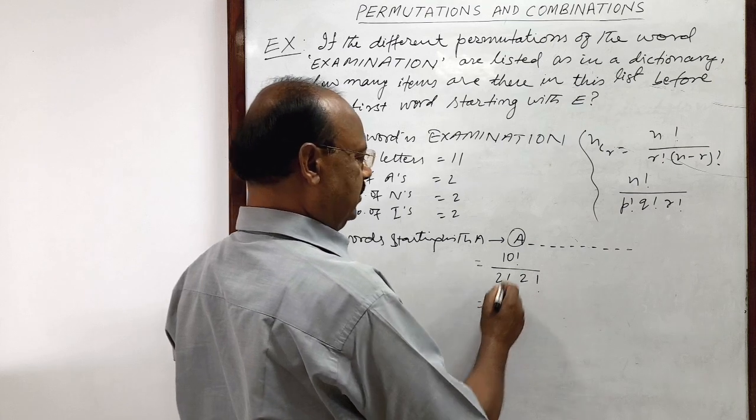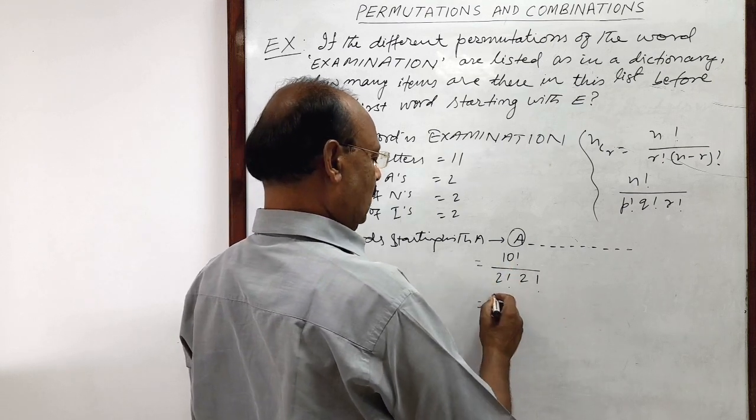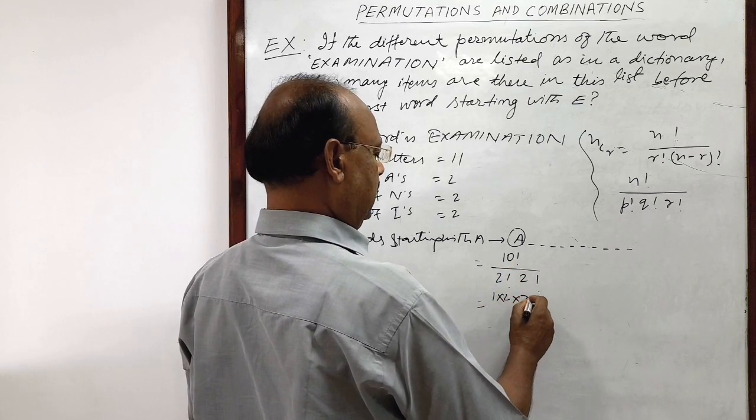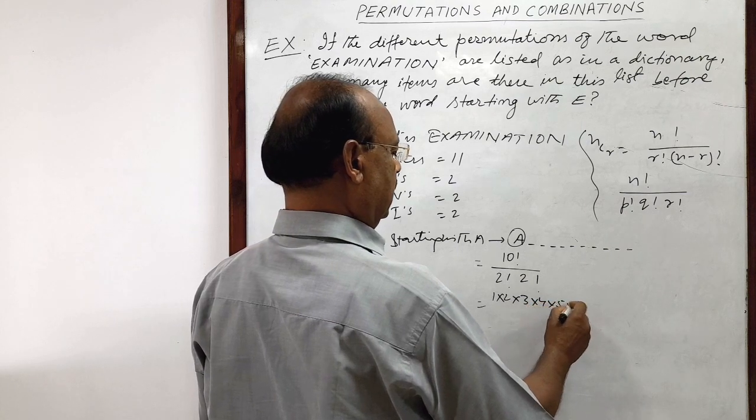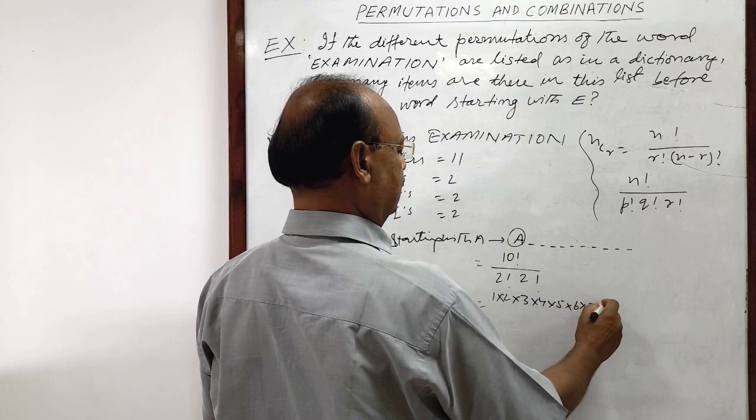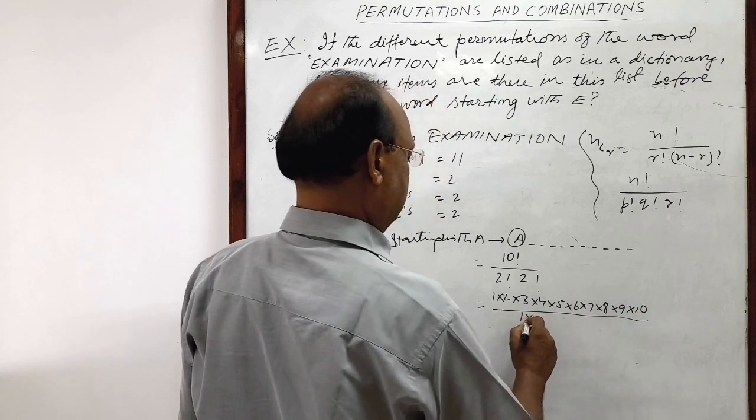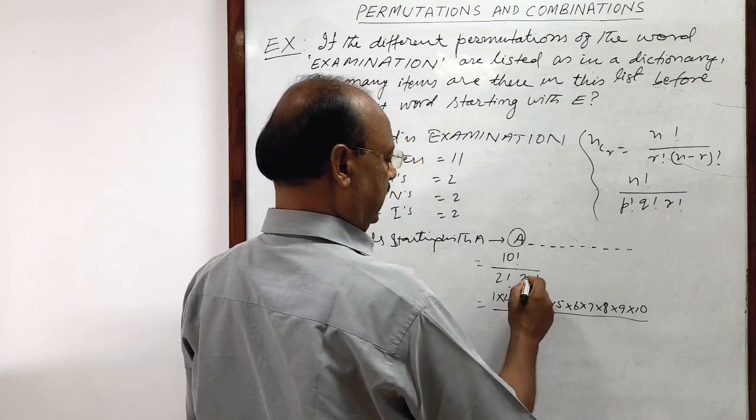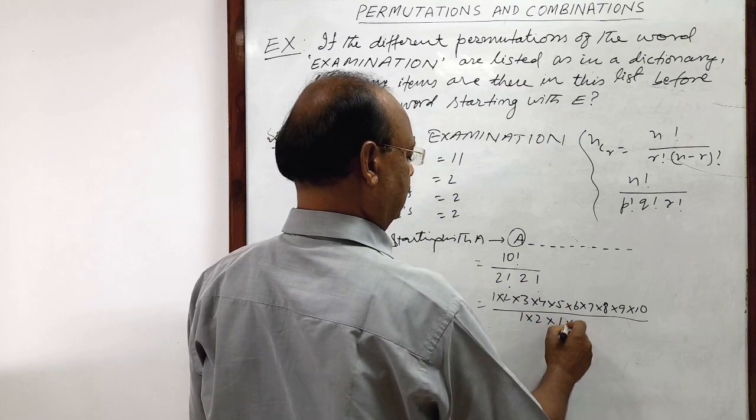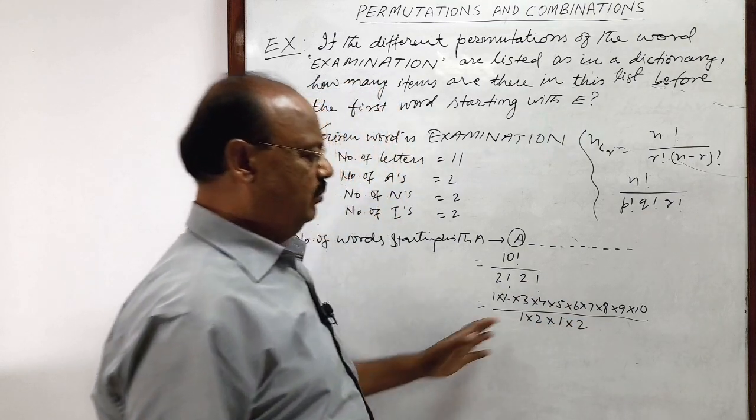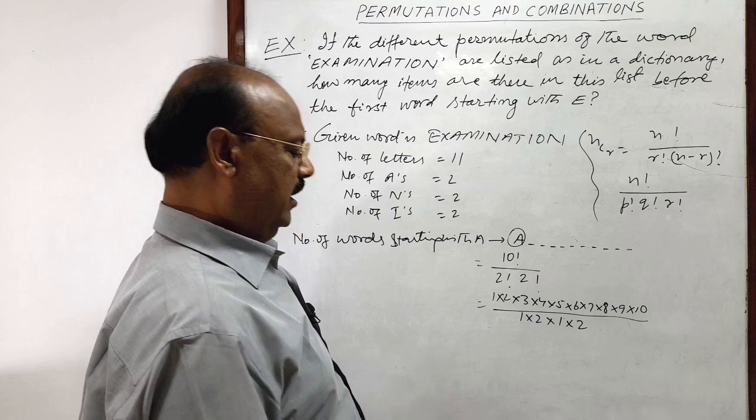So you can calculate it very easily. So this is 1 into 2 into 3 into 4 into 5 into 6 into 7 into 8 into 9 into 10, and in denominator 1 into 2, this is 2 factorial and here also 1 into 2. So we can simplify it, we can multiply it.